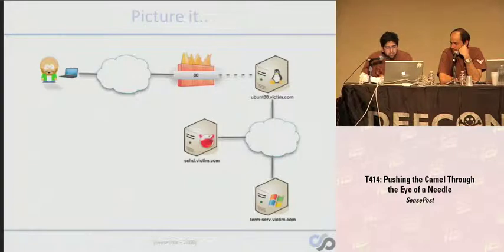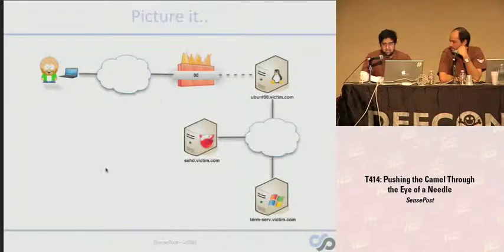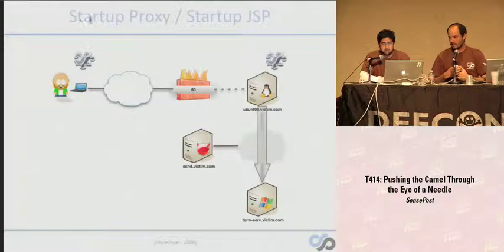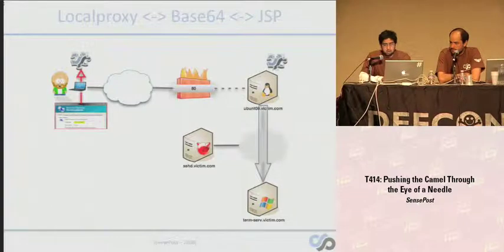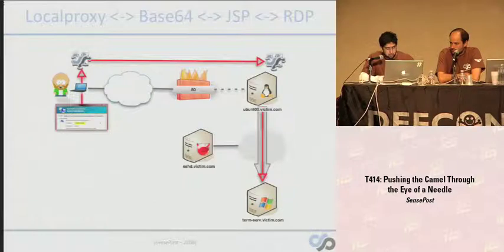All of these problems met one really smart intern at SensePost, and what we ended up with is something currently called Reider. We're looking at a network with our attacker, access to an Ubuntu machine, and inside that network a Terminal Services box and an SSH box. What we're going to do is load a JSP on the victim server, then load a little proxy on our end. The local proxy will convert TCP to HTTP GET requests, which will talk to the remote JSP, and the remote JSP exits that as TCP traffic again — so we'll be talking clean HTTP and pushing TCP cleanly through the network.